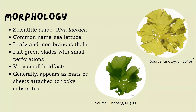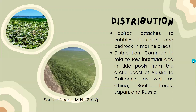It is commonly known as sea lettuce because it resembles the land plant lettuce. It has a leafy and membranous thalli with flat green blades with small perforations. They have very small holdfasts which they generally use to attach to rocky substrates, appearing as mats or sheets.